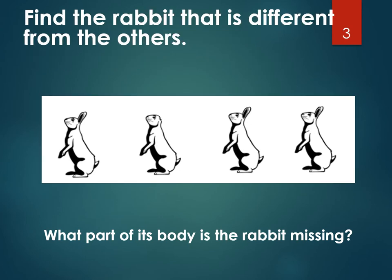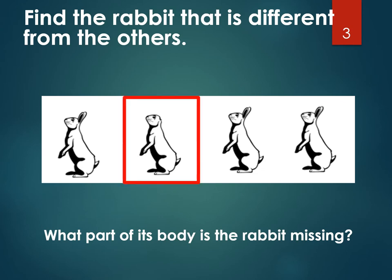Here are those rabbits again, but this time one of the rabbits is missing something else. Can you find the rabbit that is different from the others? Look carefully. Did you point to this rabbit? If you did, you are correct. What is this rabbit missing? Can you name the body part the rabbit is missing? It's missing its ears. Well done.